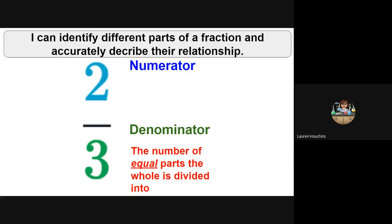So if I have a circle, I've divided it equally into three parts according to this fraction. The numerator tells me how many parts we have, so I have two out of the three parts.